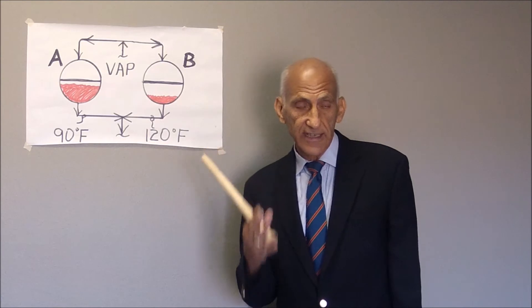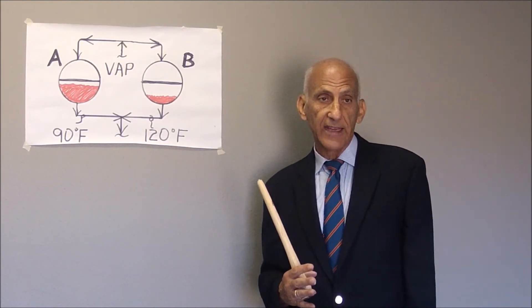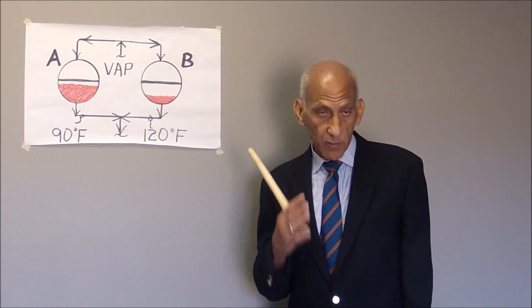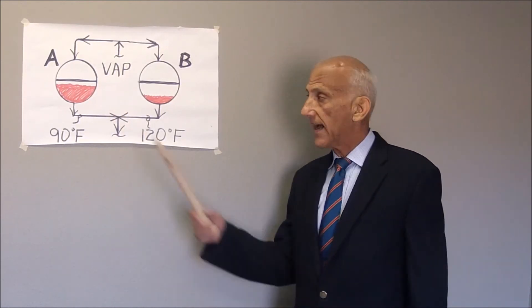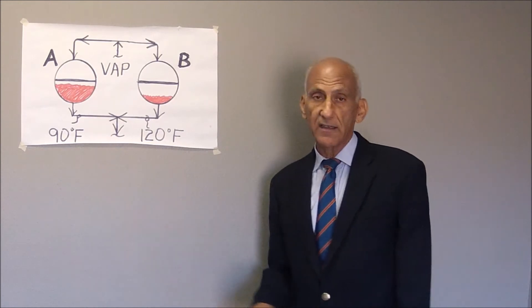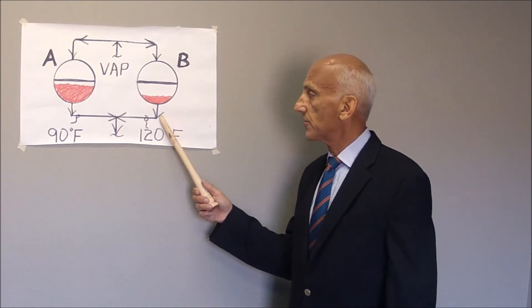the liquid, after it condenses from a vapor phase to liquid phase, is then subcooled due to condensate backup. And hence the outlet temperature from A is 90. The outlet temperature from B is 120.